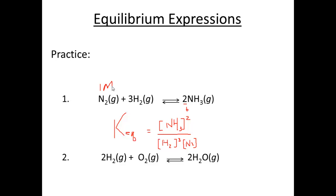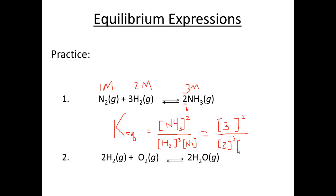Now if I told you the concentration of N2 was one molar, the concentration of H2 was two molar, and the concentration of NH3 was three molar, we plug those in. NH3 is three molar squared, divided by H2 at two molar cubed times N2 at one. Three squared is nine, and two cubed is eight, so our K-eq value is nine divided by eight.